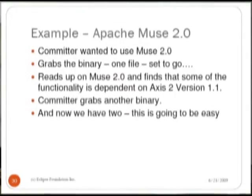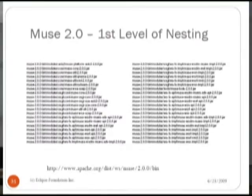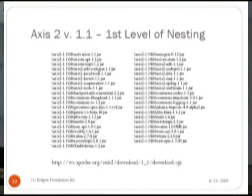Here's a real example for an Eclipse project. They needed to use Muse 2.0, which is an Apache project. When they read the source code, they found they also needed Axis 2 version 1.1. It looked relatively easy — just two binaries. But when we looked at the source code for the Muse 2.0 project, there was a whole first level of nesting with many other open-source projects contained within it. Similarly for Axis 2 version 1.1. We work with committers to whittle it down and identify the key requirements for due diligence.